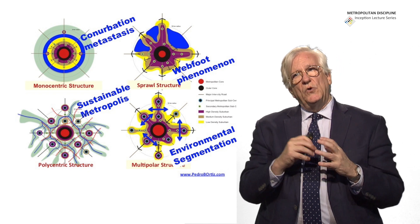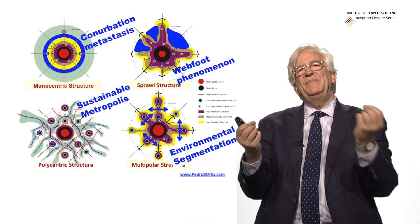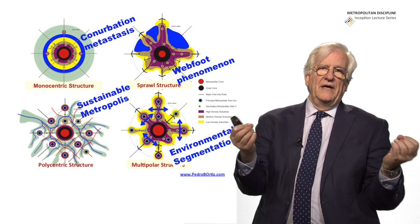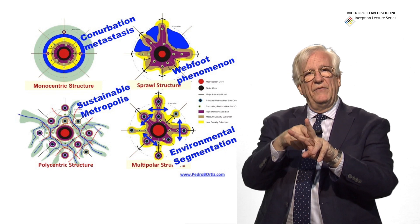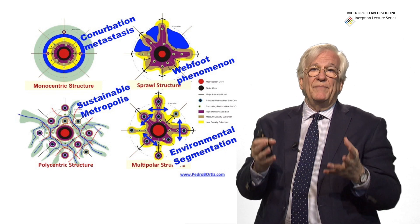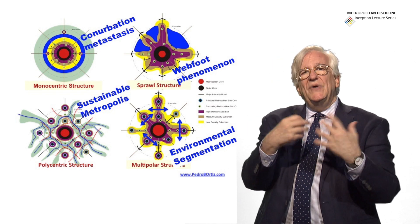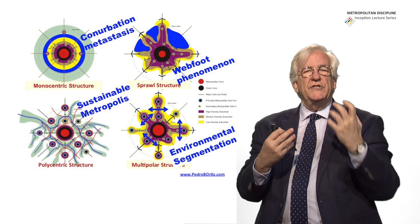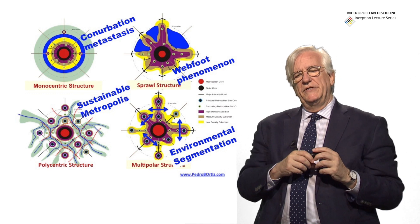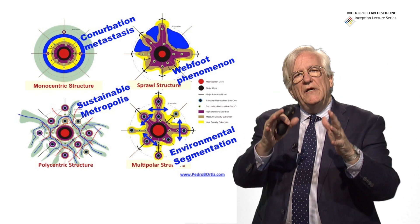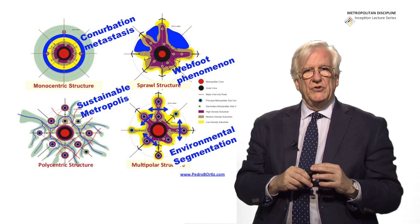The second one, the sprawl structure — people locate not depending on distance but on the time it takes to reach the center, and they locate along transport structures. But there is a moment those transport routes take so long that in the interstitial areas between the fingers people start to settle and build there. At the end you have this web-foot phenomenon of the metropolis, ending up with a system similar to the monocentric structure. That web-foot phenomenon doesn't make this finger-like metropolis work well unless you are Copenhagen and have very strong administrative control of land use — but that's not the case in most metropolises around the world.